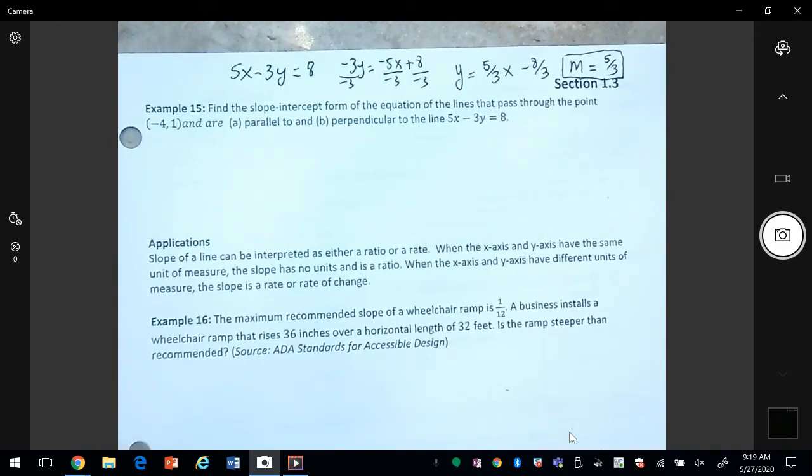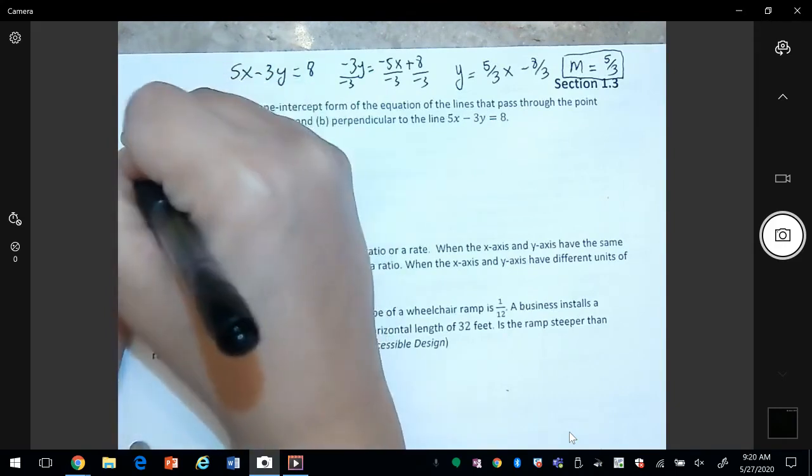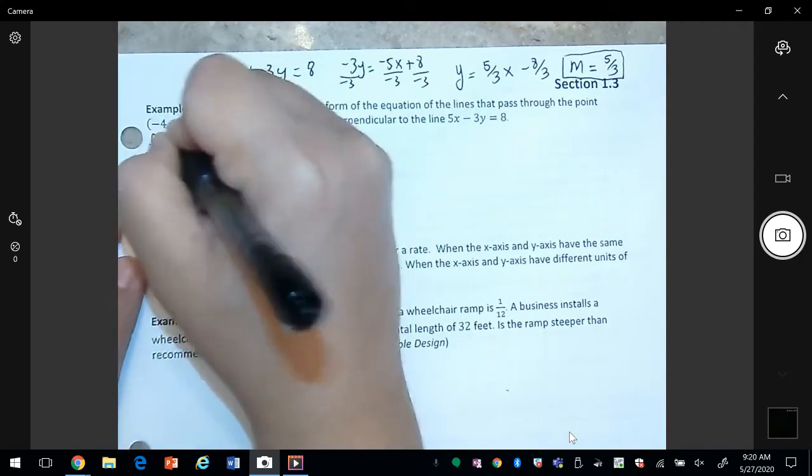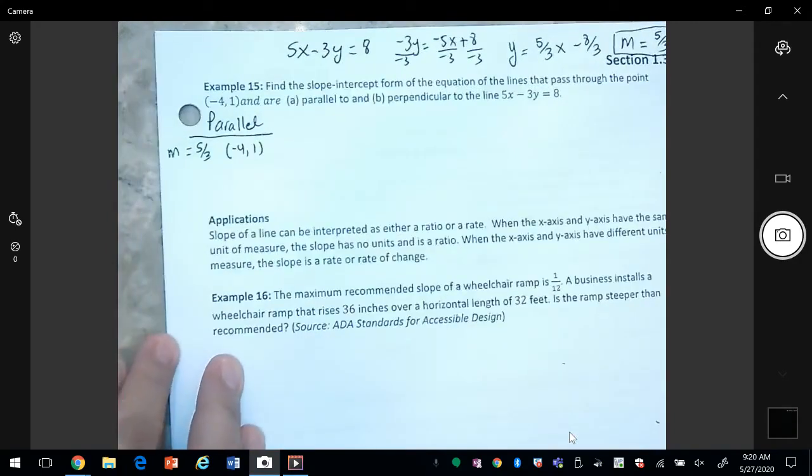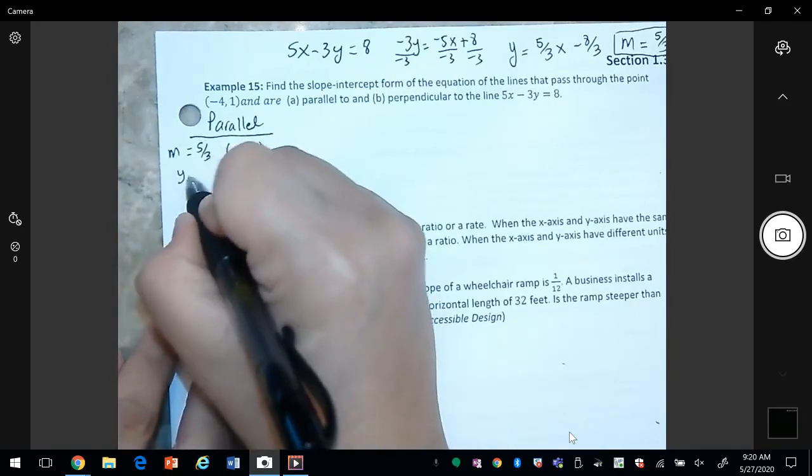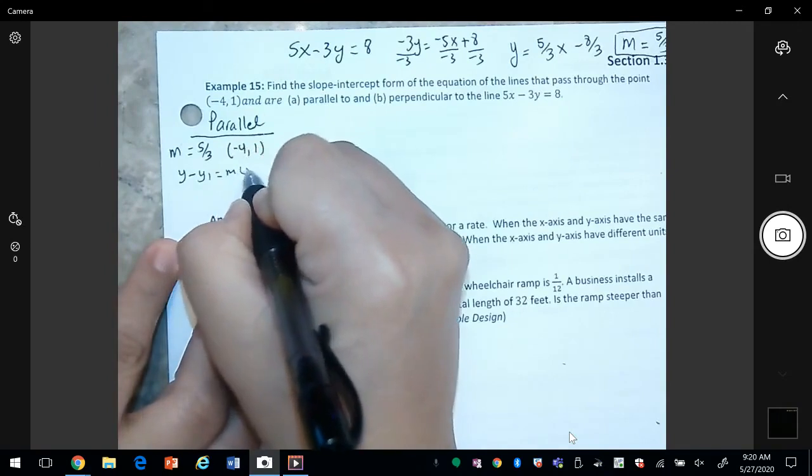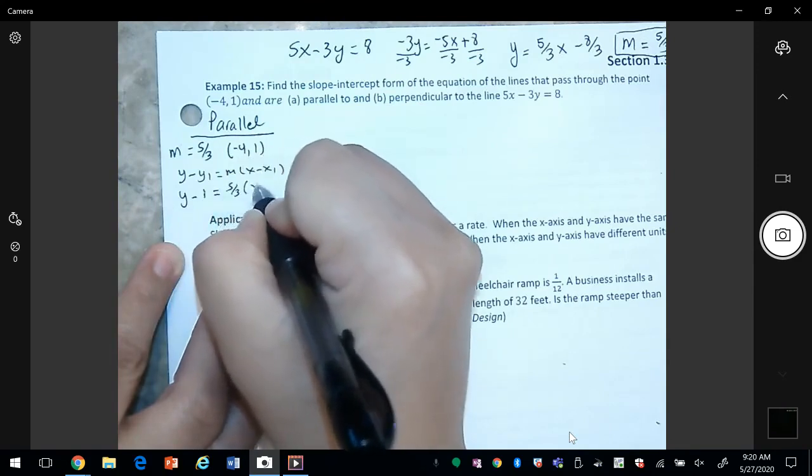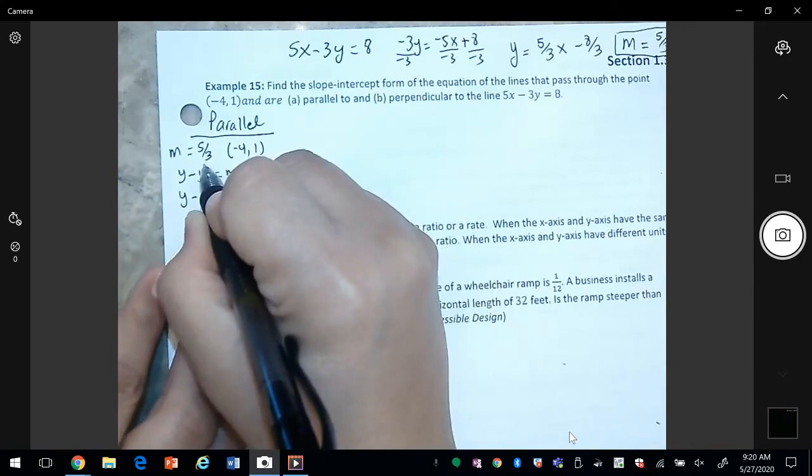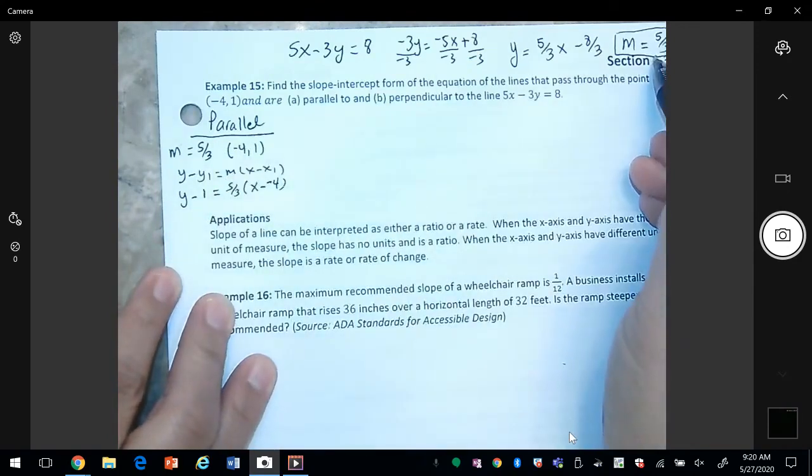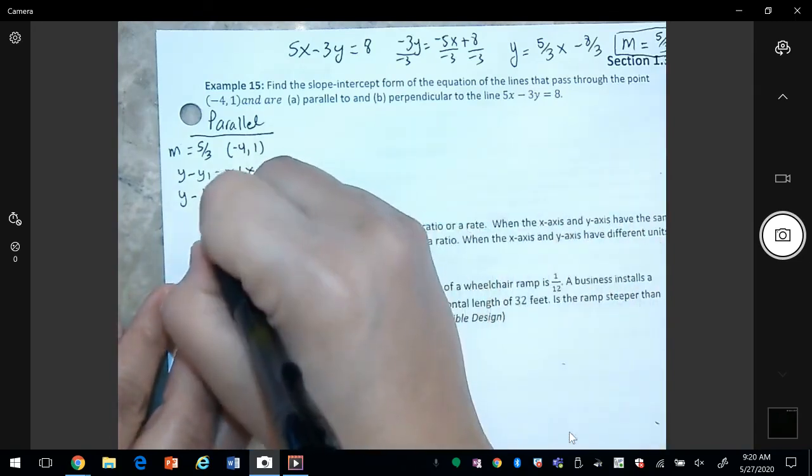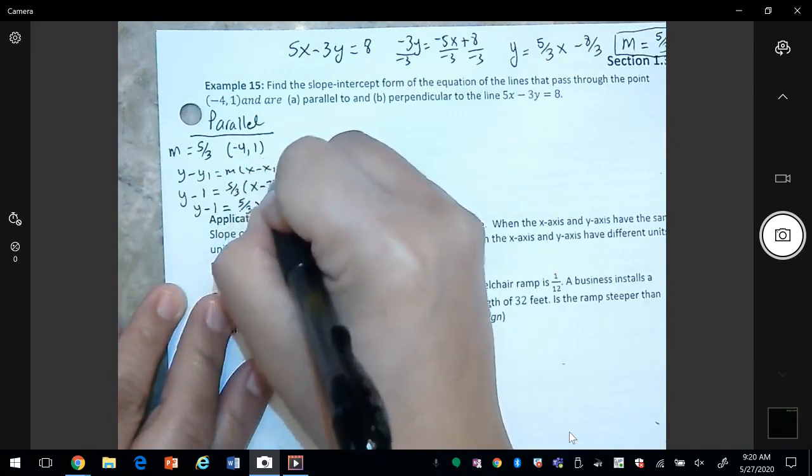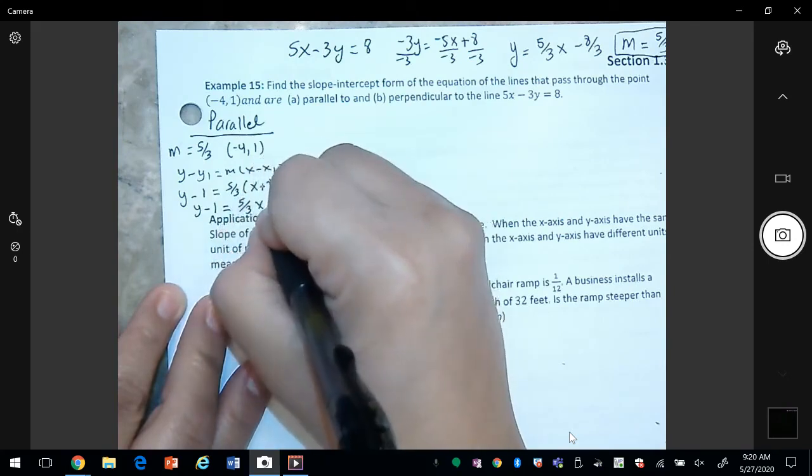Once we have the slope, which is five thirds, then we can proceed. So let's work with the parallel first. So the slope is five thirds and the point that they gave us is negative four and one. So this just becomes like the other problems: y minus y1 equals m(x minus x1). y1 is one, my slope is five thirds, x minus negative four. I'm using five thirds because it's parallel, that means that I'm going to use the same slope. Let's simplify a little bit here, so we get y minus one is equal to five thirds x—negative negative is positive—five thirds times four is twenty thirds.